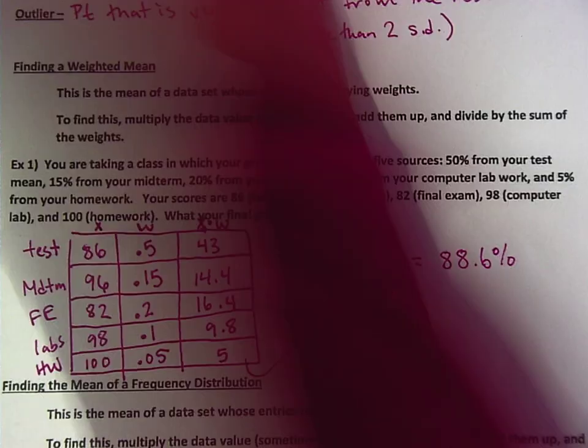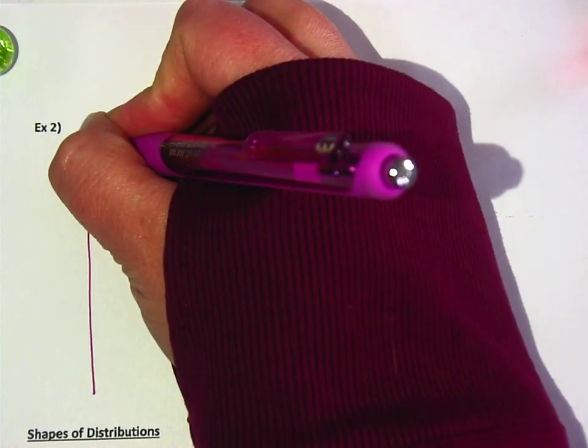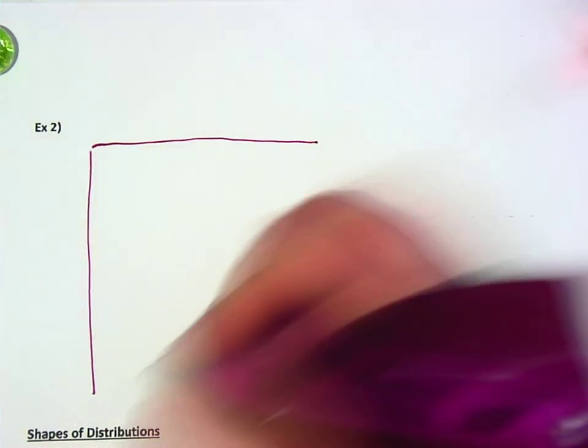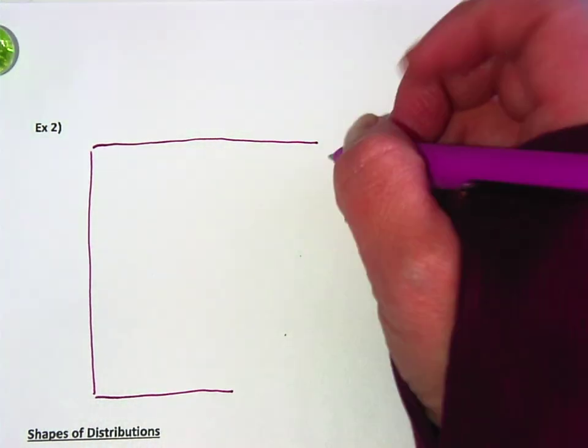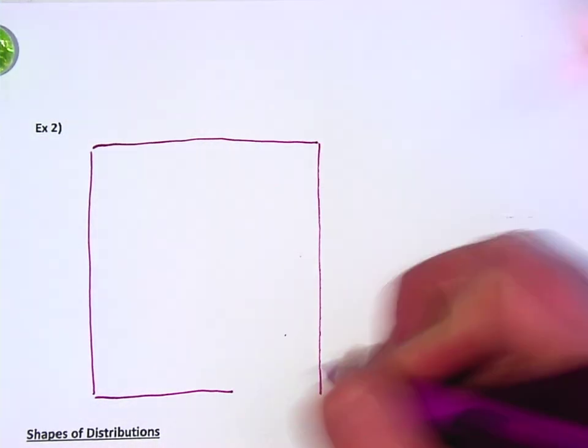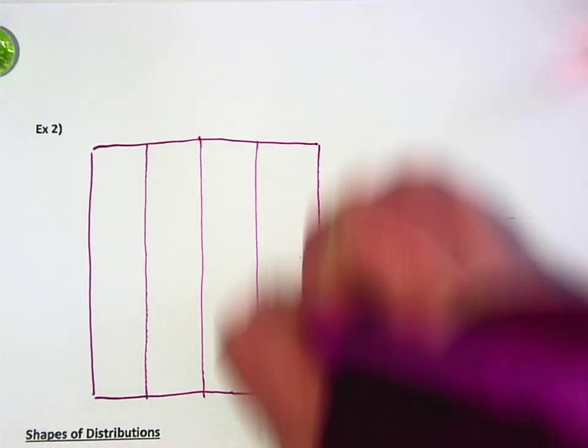So we're going to make up some data for the next one. Okay, you're going to want four columns for this one and let's do five rows.